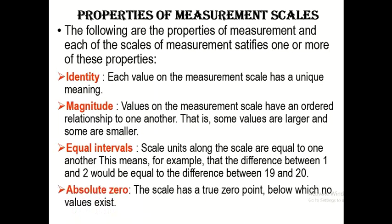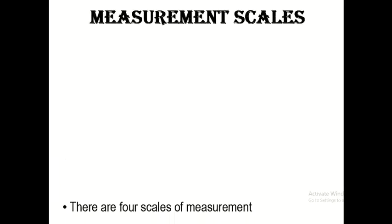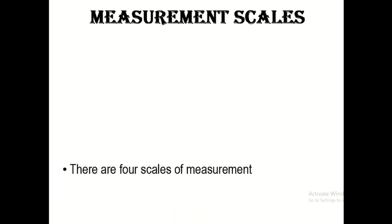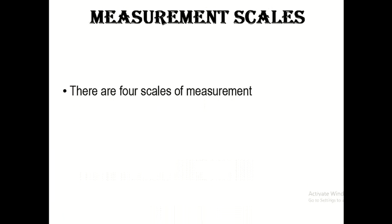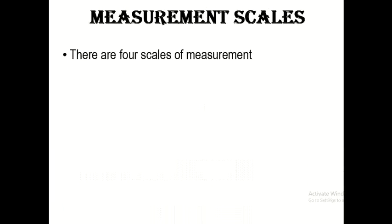The final property is absolute zero: the scale has a true zero point where zero means absolute zero, and no value can ever fall below it. Now let's take a look at the four scales of measurement.